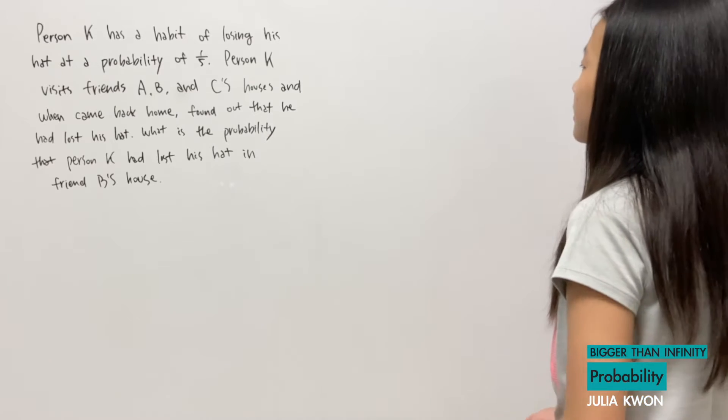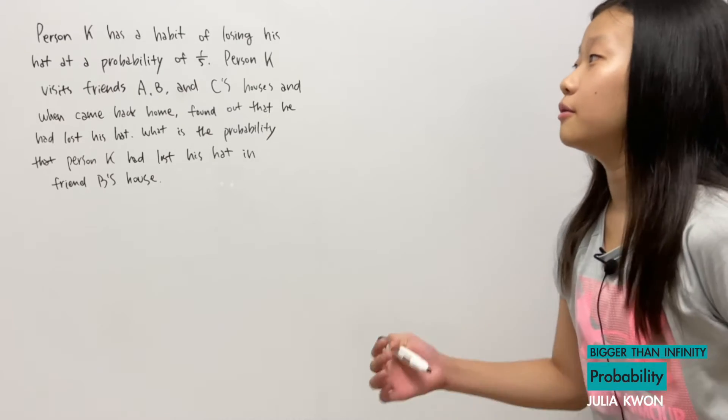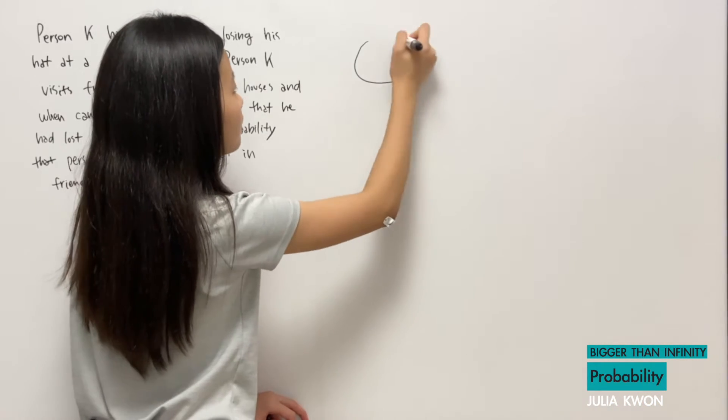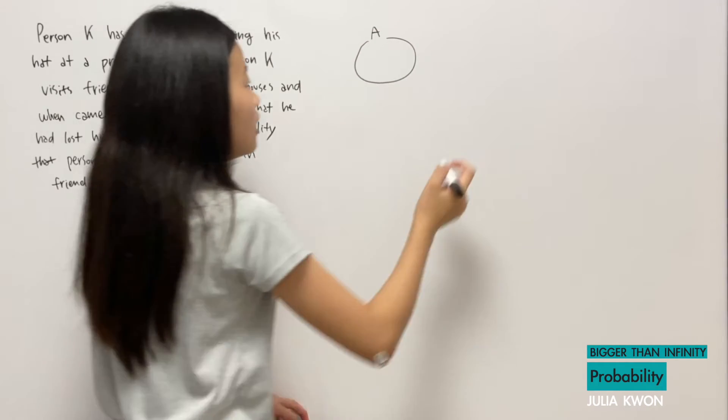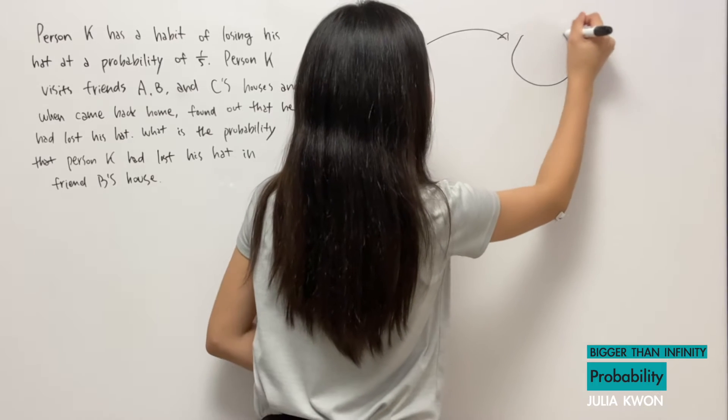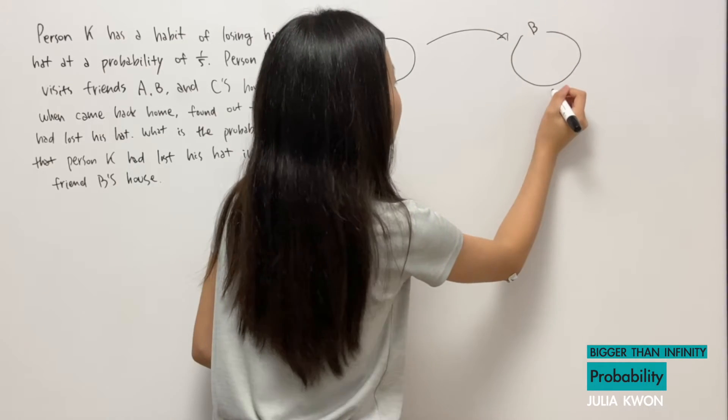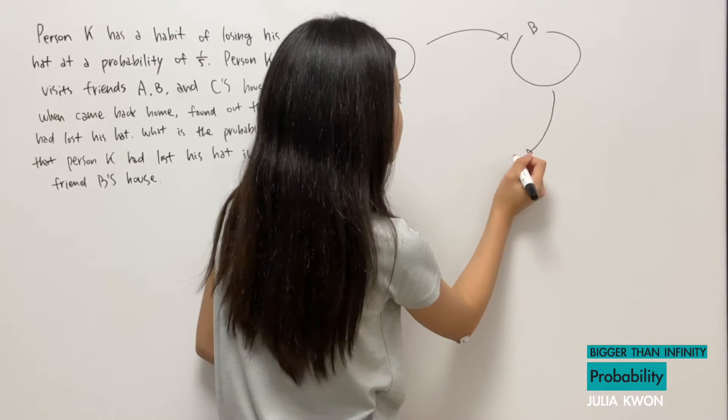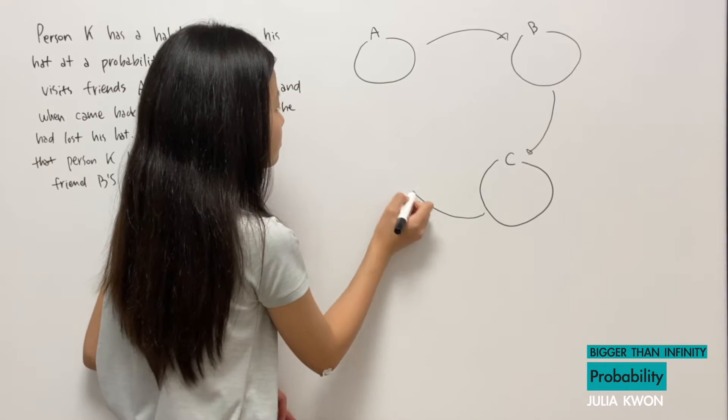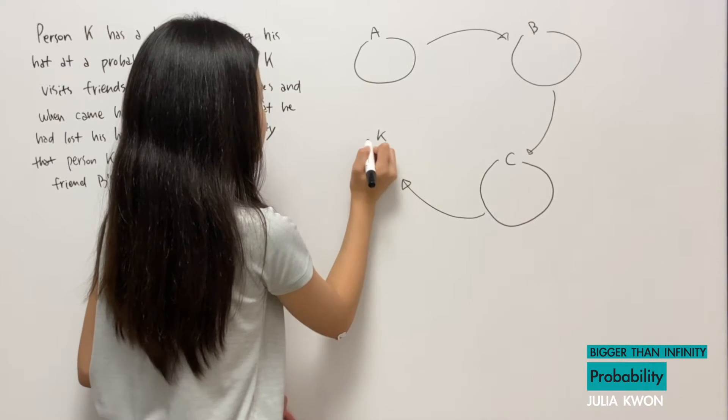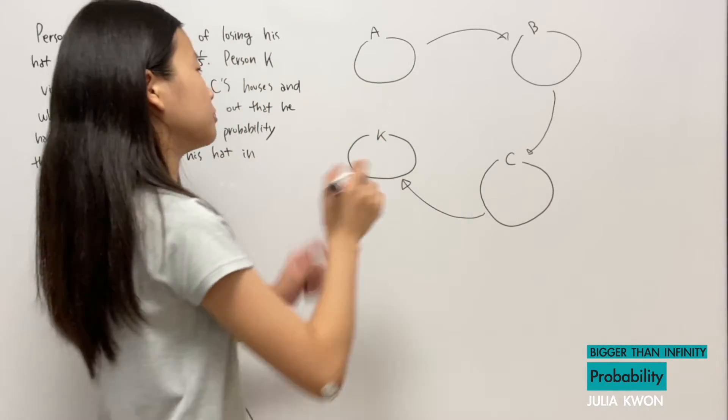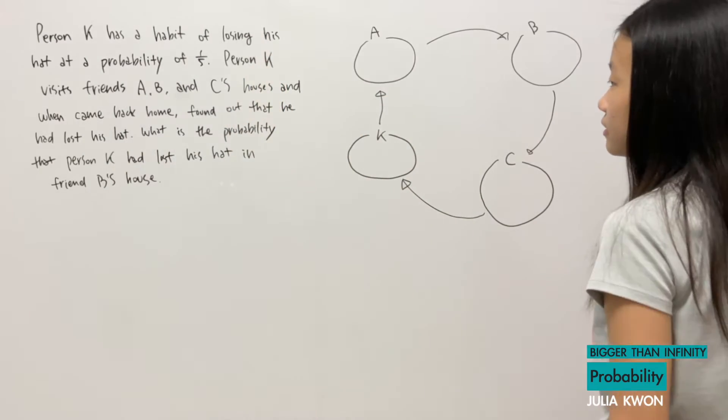First, we're going to make a diagram to help us solve this problem. We first have friend A's house, and he goes to friend B's house afterward, and then he goes to friend C's house. After that, he returns home, and his name is K. And of course, at first, he started from his house and went to house A.